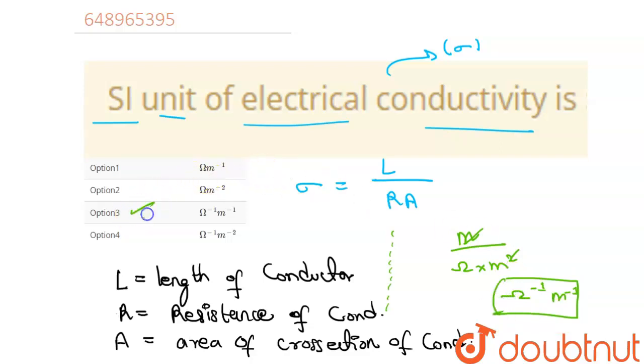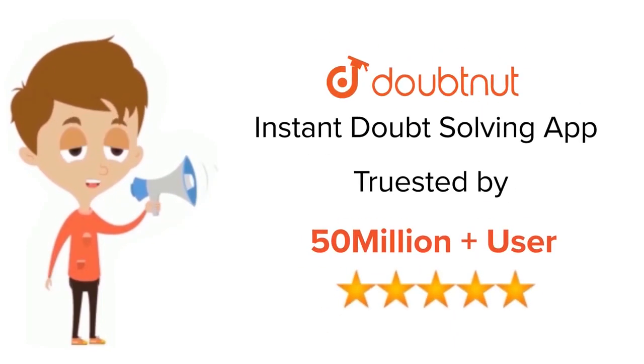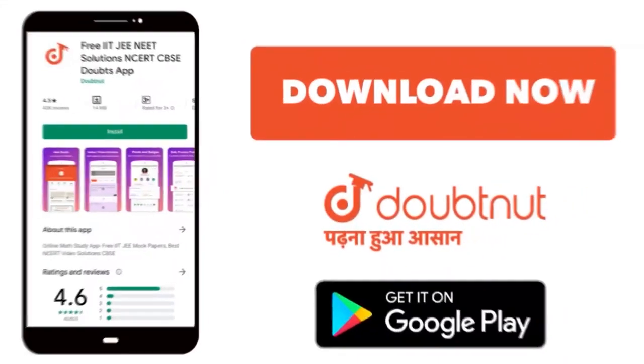So option three will be our final answer. For class 6th to 12th, up to IIT-JEE and NEET level, trusted by more than 5 crore students. Download Doubtnet app today.